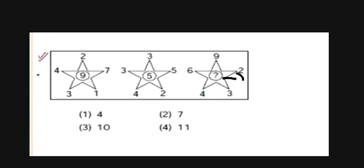To find the missing number here, we can see that if we add the numbers on the top and add the numbers in the bottom and subtract with each other, we get the central number.